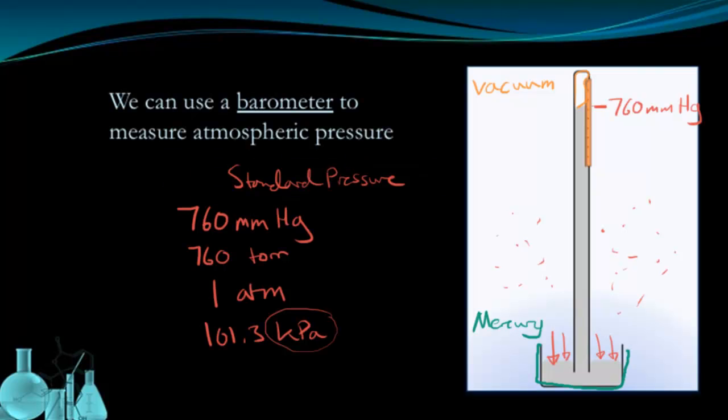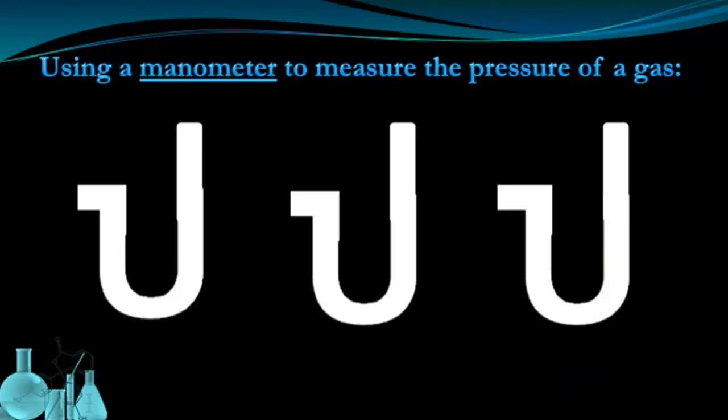So we just looked at how a barometer measures atmospheric pressure. There's another device called a manometer that can measure the pressure of a gas in a closed container. And it does that by essentially comparing it to atmospheric pressure. Let's see how these work.